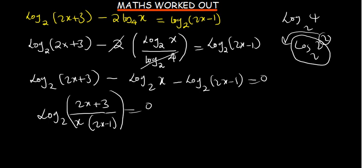So we express now this in exponential. So 2 to the power 0 is equal to this. And you know 2 to the power 0 is 1. So 1 is going to be equal to 2x plus 3 divided by 2x squared minus x. Cross multiply. 2x squared minus x is equal to 2x plus 3.